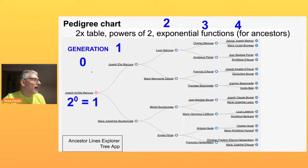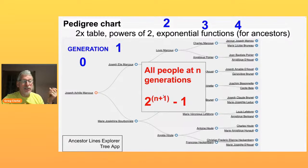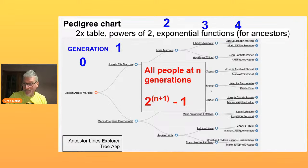We can get even geekier: there's a formula. If we want to calculate all the people at N generations from Joseph, it's 2^(N+1) − 1. So if we want to calculate all the people in here at four generations, we go 2^(4+1) = 2^5 = 32, minus 1 = 31 people in this pedigree chart.